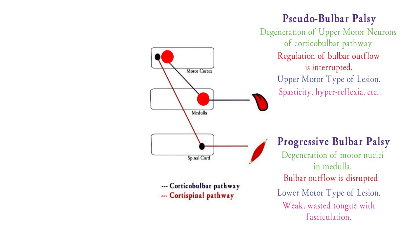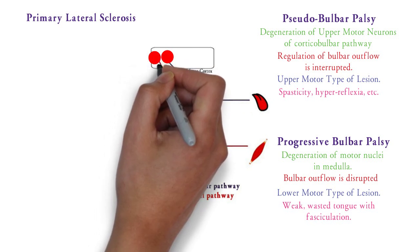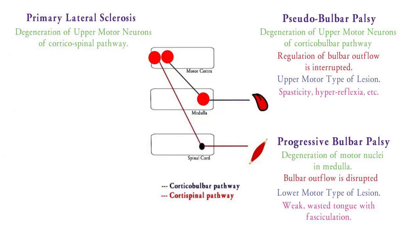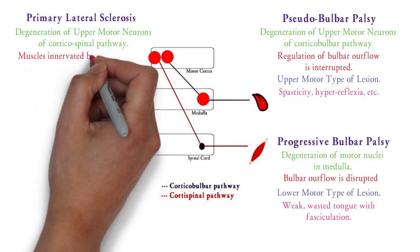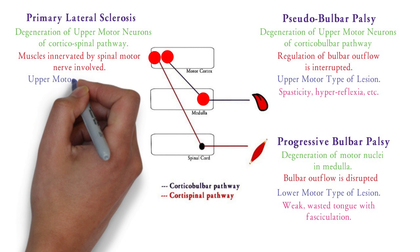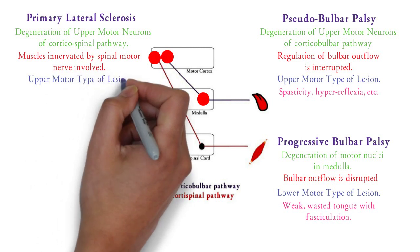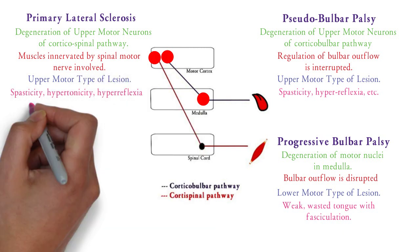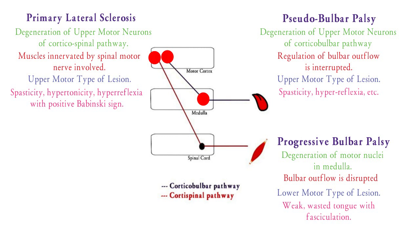Now we will see disease involving the corticospinal tract. The first is primary lateral sclerosis. Here there is degeneration of upper motor neurons of the corticospinal pathway in the motor cortex. So muscles innervated by these nerves will show upper motor neuron type of lesion, and the presentation will be spasticity, hypertonicity, hyperreflexia with a positive Babinski sign.